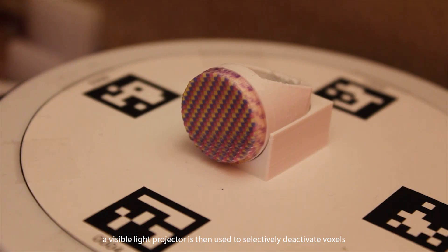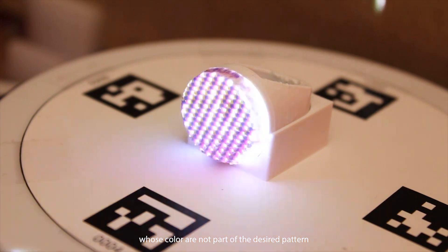A visible light projector is then used to selectively deactivate voxels whose colors are not part of the desired pattern.